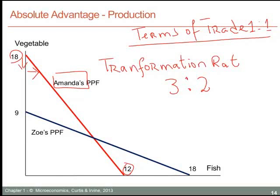her transformation rate is three to two. She can reduce the amount of time allocated to vegetables such that vegetable production is reduced by three units, and if she takes that time and allocates it to fish, she will be able to produce two units of fish. (Note: the letter E was accidentally omitted from 'transformation rate' on screen.)